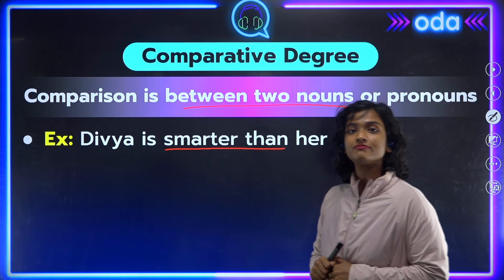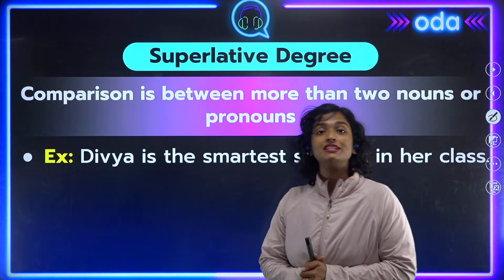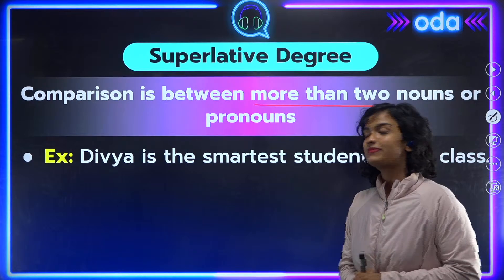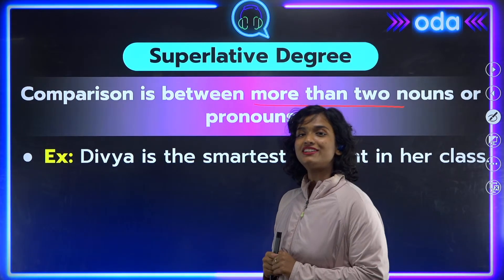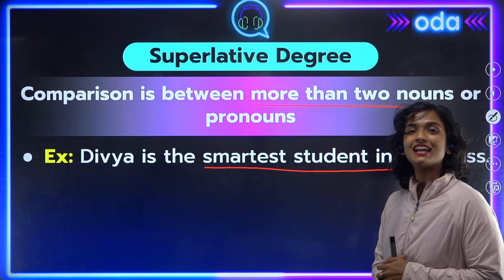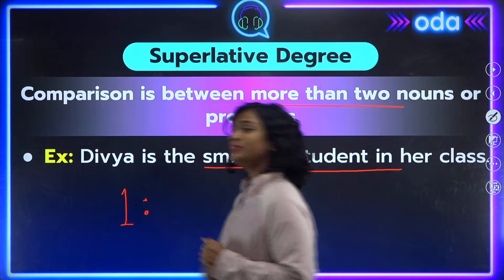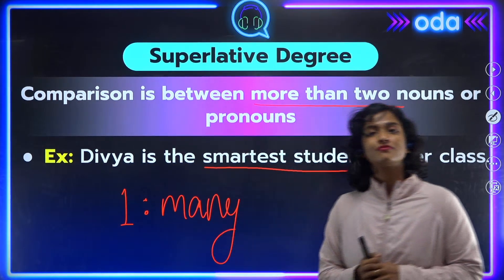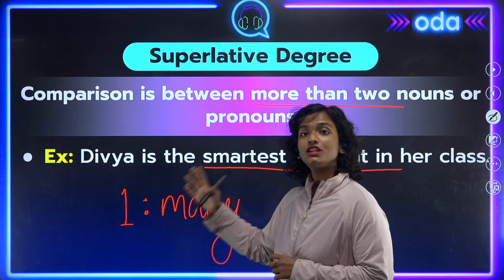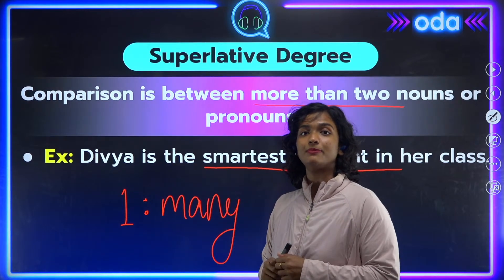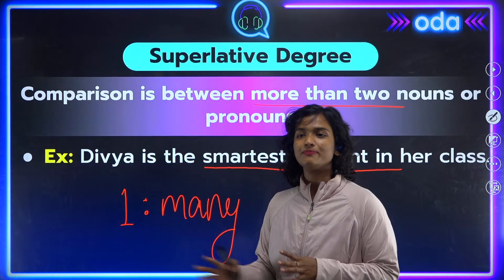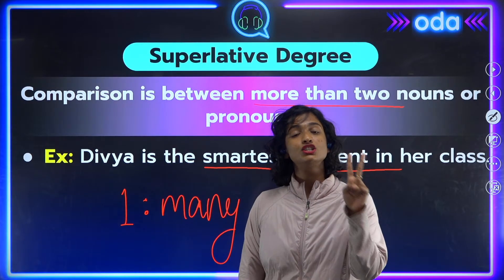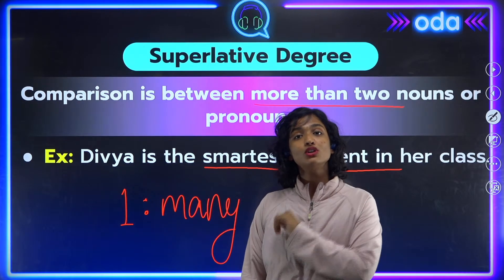Our third degree is the superlative degree. In the superlative degree, we make a comparison between more than two nouns or pronouns — most often a one-to-many comparison. For example, 'Divya is the smartest student in her class' — we are comparing Divya to all other students. Similarly, 'Einstein was the smartest scientist of his time.' So three degrees: positive — no comparison; comparative — comparing two; superlative — comparing more than two.